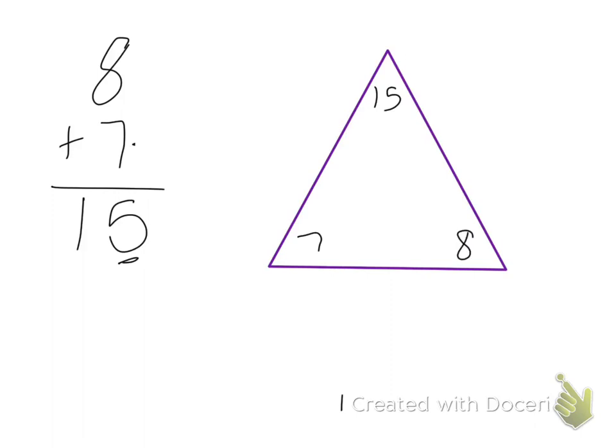So let's figure out the two addition facts and the two subtraction facts. We know that 7 plus 8 is 15, so 8 plus 7 is 15. And then the subtraction facts will be 15 minus 8 is 7, and 15 minus 7 is 8.